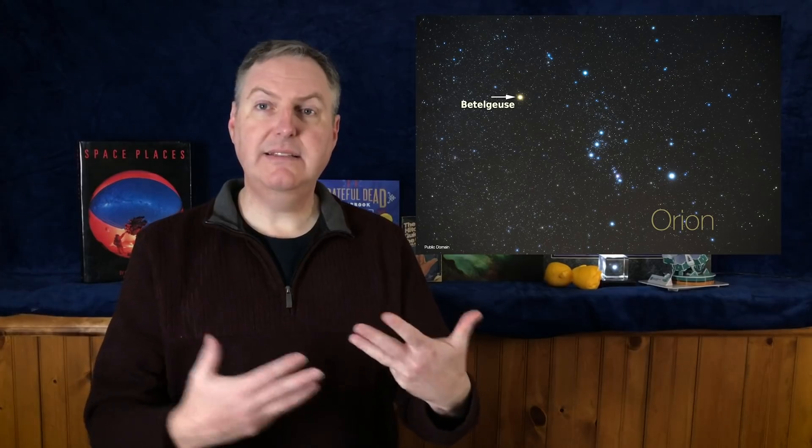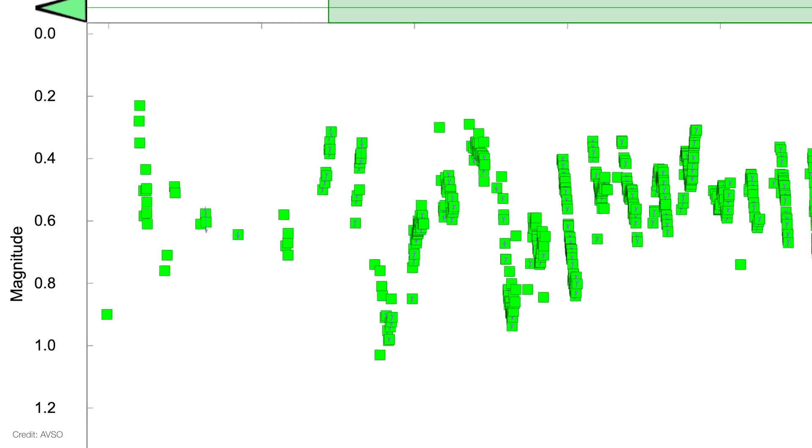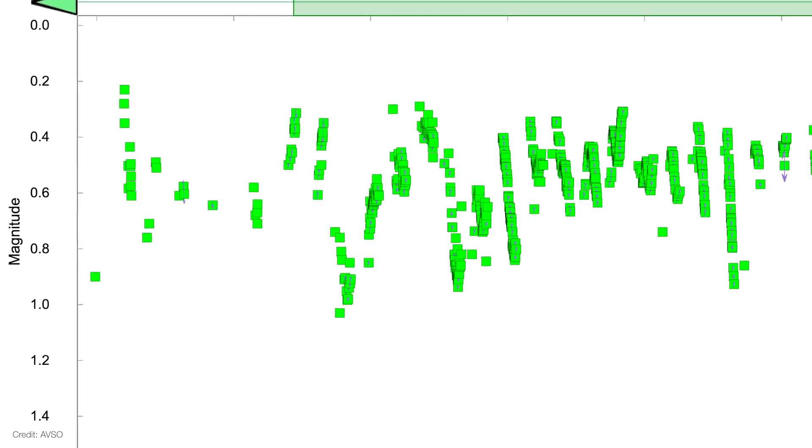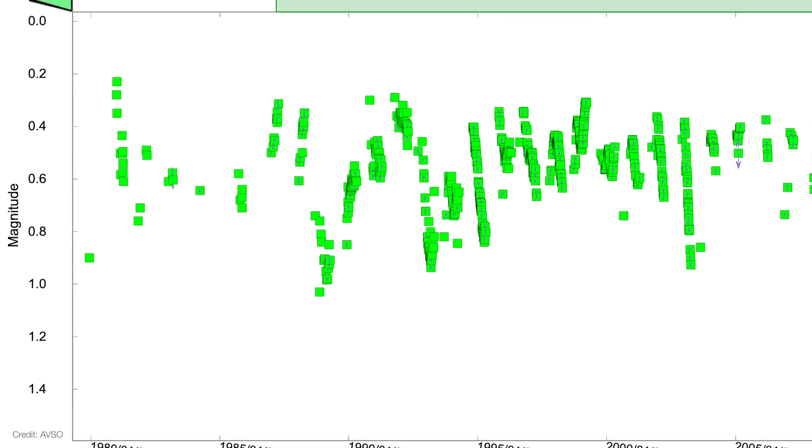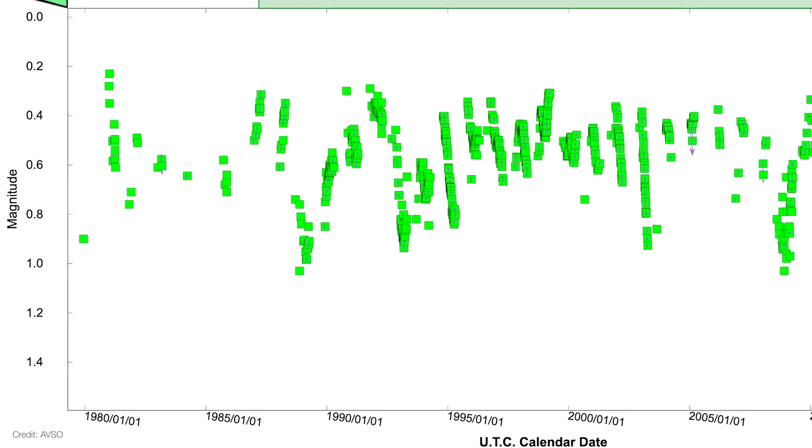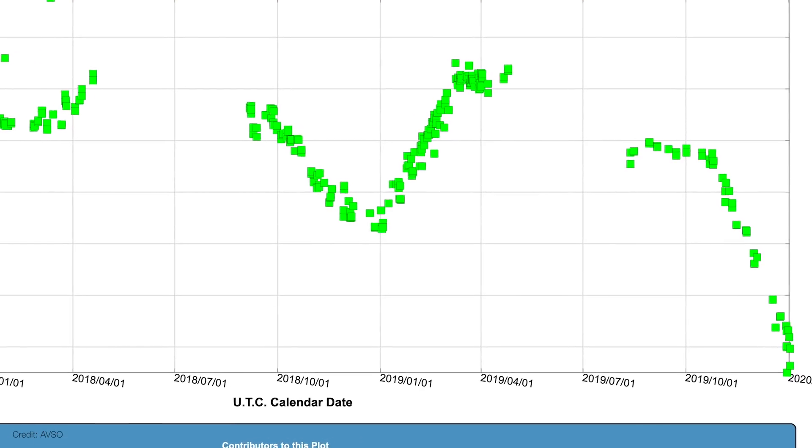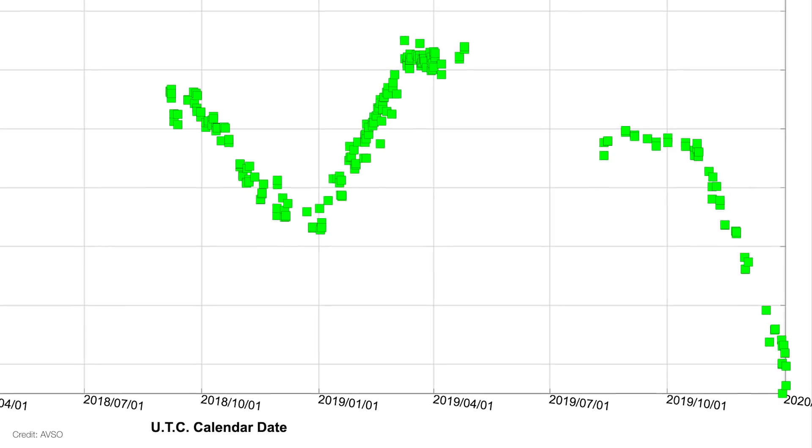Now, Betelgeuse has been acting up lately, or more accurately, it's been acting down, if anything. Betelgeuse normally has a visual magnitude of 0.5, although it does vary by less than one magnitude because it is a variable star. Then, starting around Thanksgiving, it began to drop below its typical low brightness.